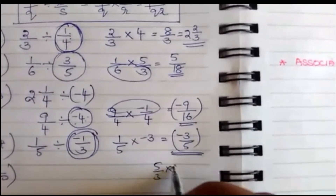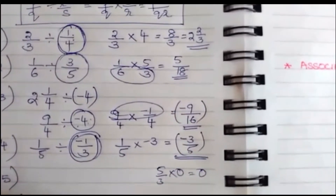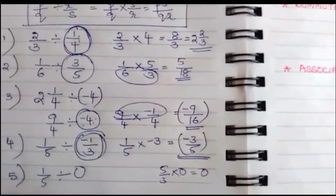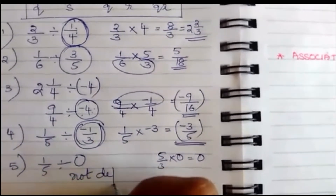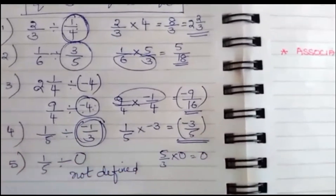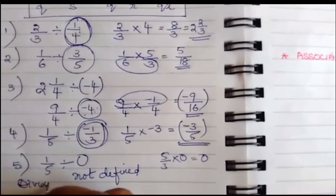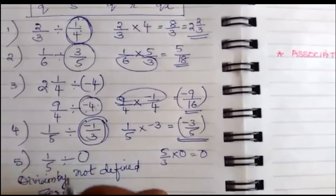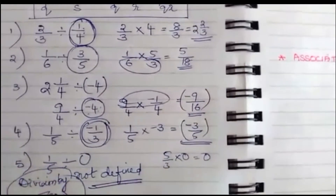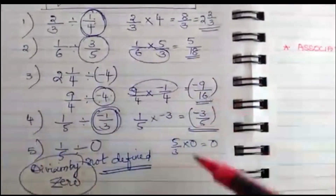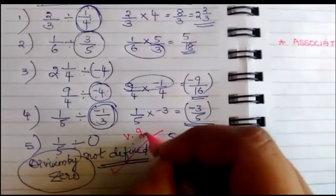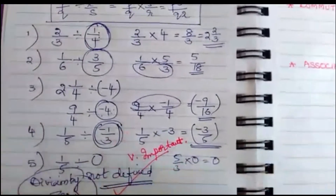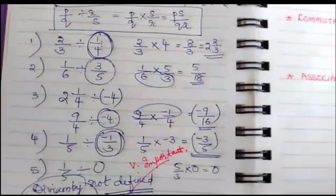Now there is an extraordinary special case. For multiplication, 5/3 × 0 = 0, but for division: 1/5 divided by 0 — division by 0 is not defined. This is a very important special case: division by 0 is not defined. While doing the properties, you will come to know more about this. Thank you.